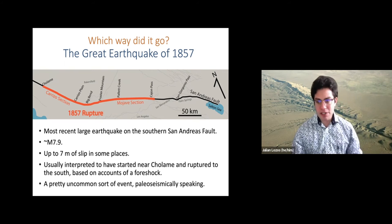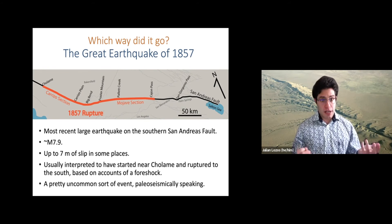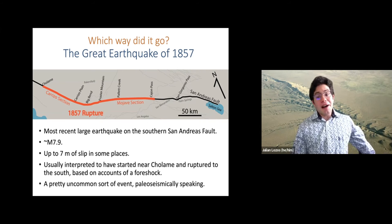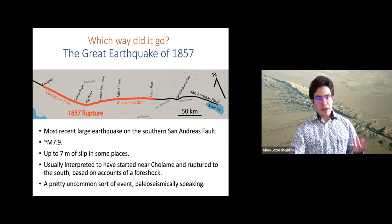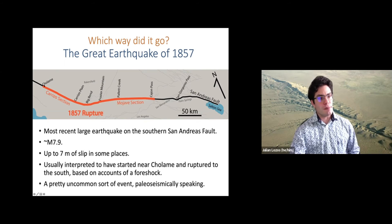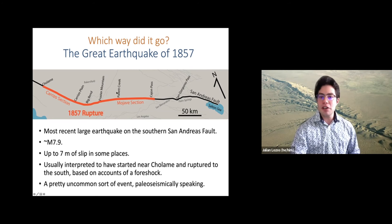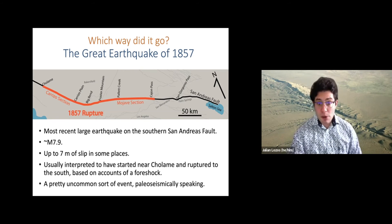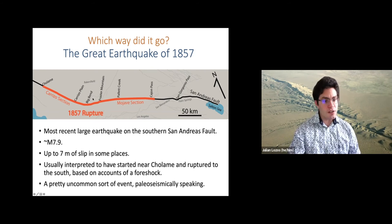The last thing I want to talk about is the 'which way did it go' question, looking at the great San Andreas earthquake of 1857 — sometimes heard as the Fort Tejon earthquake. This is work in progress, so I don't have any super big conclusions yet. This was a rupture that goes from Cholame in central California to near San Bernardino — about a 250 kilometer long rupture. It's the most recent large earthquake on this section of the San Andreas. In some places, it had up to seven meters of slip, and it's inferred to have been a 7.8 or 7.9.